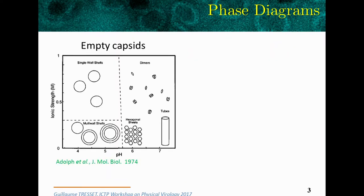Interestingly, we can draw a phase diagram of this virus. This is the phase diagram for empty capsids. At physiological pH, you can get only subunits free in solution. When you lower the pH to about 5, spontaneously the subunits self-assemble and you end up with empty capsids. If you lower the salinity, you can get other structures like tubes and multi-walled shells.